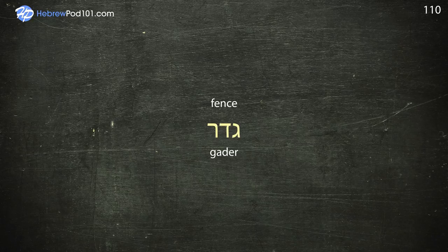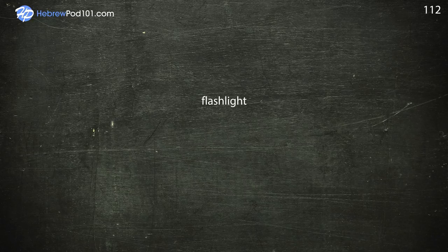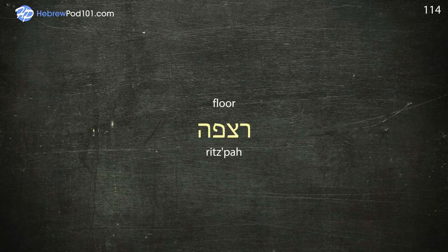First floor. Flashlight — Panas. Flat — Dira. Floor — Rizpa.